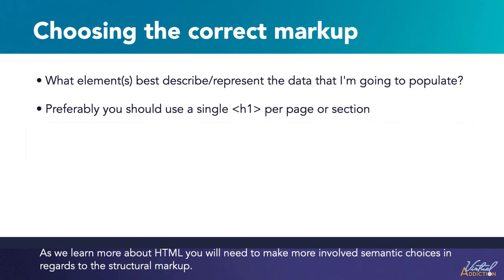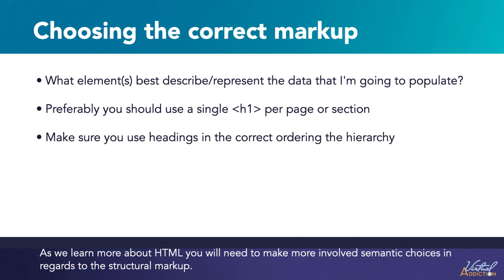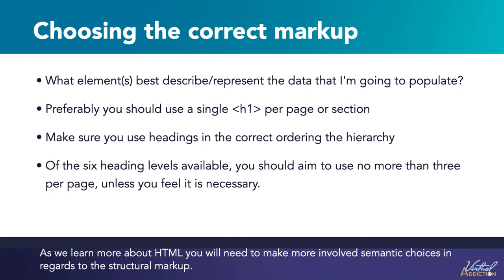Preferably, you should only use a single H1 per page or section — this is the top-level heading and all the others sit below it in the hierarchy. Make sure you use headings in the correct order; don't use H3 elements to represent subheadings followed by an H2 to represent a sub-subheading, as that doesn't make sense and will lead to weird results. Of the six heading levels available, aim to use no more than three per page unless necessary. Documents with deep heading hierarchy become unwieldy and difficult to navigate, so if that occasion arises, it's advisable to spread the content over multiple pages if at all possible.